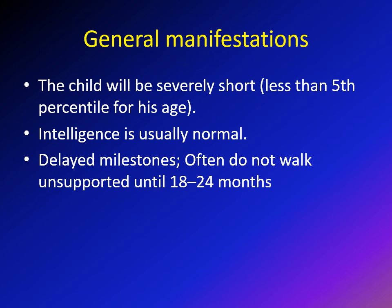These children will be severely short, meaning less than the fifth percentile for their age. Intelligence is usually normal. They will have some delayed milestones — typically they don't walk unsupported until 18 to 24 months. This is mainly because of their hypotonia and the difficulty balancing a normal-sized head on short extremities.